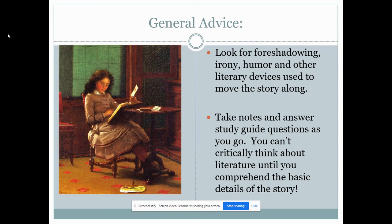General advice: look for foreshadowing, irony, and humor, and other literary devices used to move the story along. Joyce particularly makes use of dark humor and language and colloquialisms — all important things to look up and make note of as you go. Take notes and answer your study guide, but you can't critically think about literature until you comprehend the basic details of the story. Make sure you understand the plot and what's happening before you try to dig deeper and interpret it.